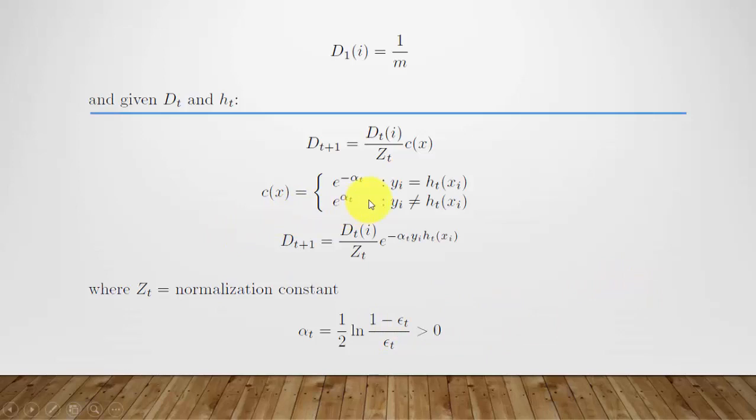And if y is not the same as h, this is for binary decisions. For example, if we have, if it's a face, c is equals to this. If not, this case.